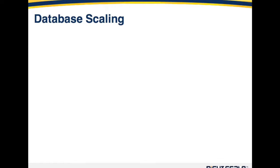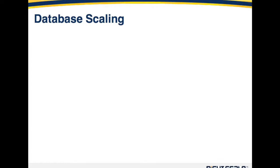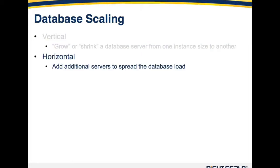I'd now like to talk about database scaling — specifically two types. The first is vertical scaling: the concept of growing or shrinking a database server from one instance size to another. For example, if you're using AWS's M1 large and it's not cutting it anymore, you can vertically grow to an M1 extra large, M2 double XL, or quad XL. The RightScale platform allows you to do this in an automated fashion with virtually no downtime. The other direction is horizontal scaling — adding additional servers to help spread the database load. The next few slides will pictorially represent both concepts.